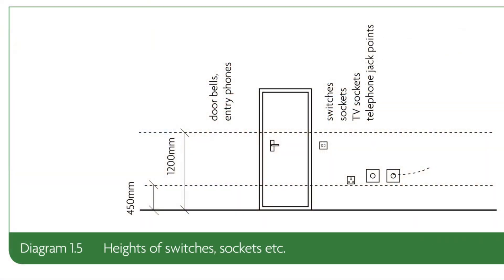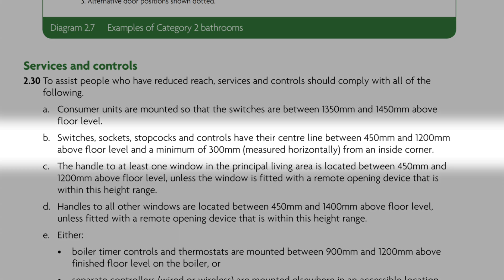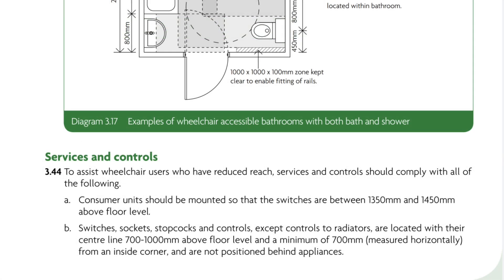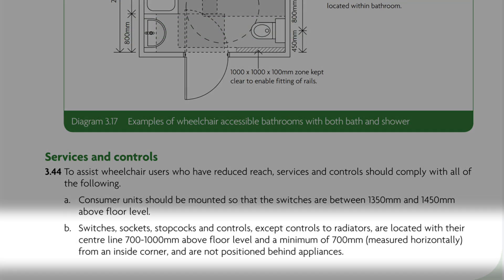For category one, switches and sockets serving habitable rooms throughout the dwelling have their centre line 450 to 1200mm above floor level. Category two dwellings should have switches and sockets with their centre line 450 to 1200mm above floor level, with the additional requirement that they are also at least 300 millimetres horizontally from an inside corner.